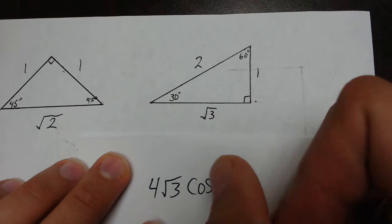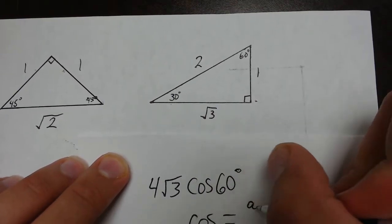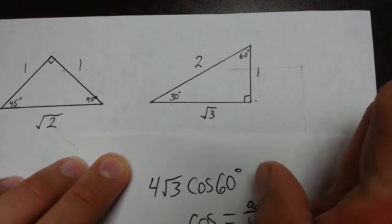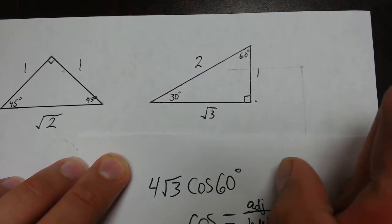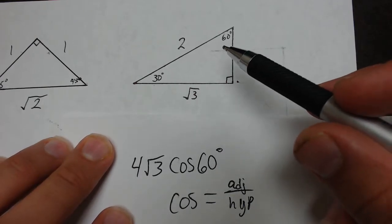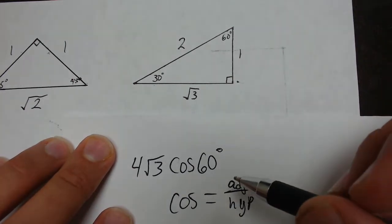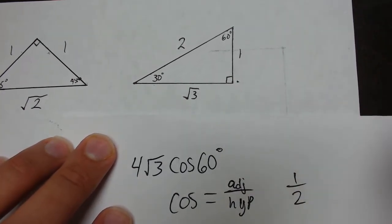So to find the cosine of 60 degrees, we draw our 30, 60, 90 reference triangle. We remember that cosine is equal to adjacent over hypotenuse. The 60 degree angle has an adjacent side of 1, and the hypotenuse is 2. So the cosine of 60 is going to equal 1 over 2, or 1 half.